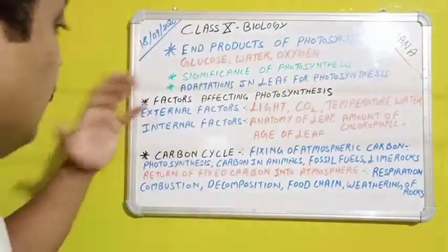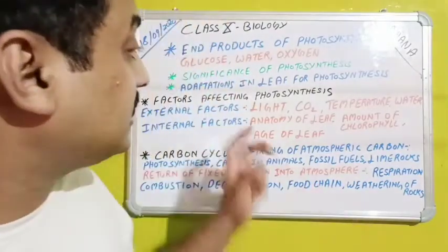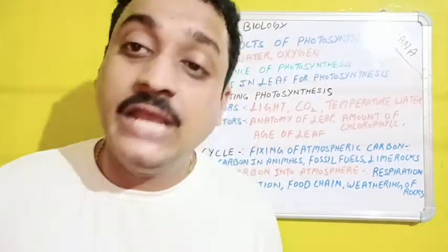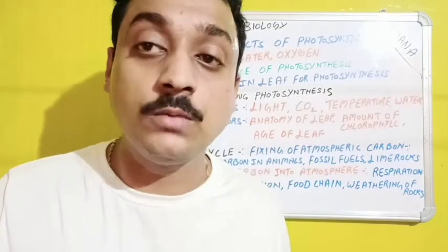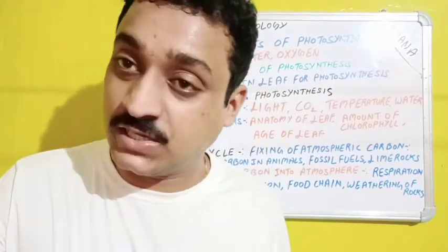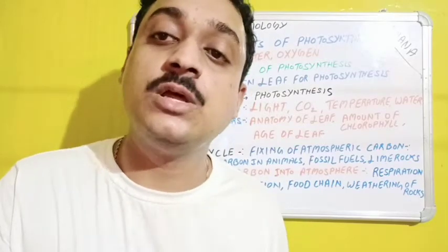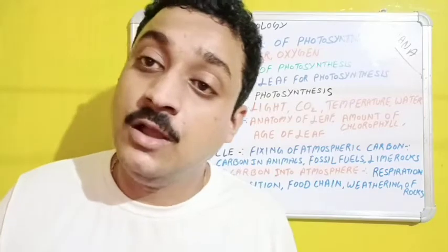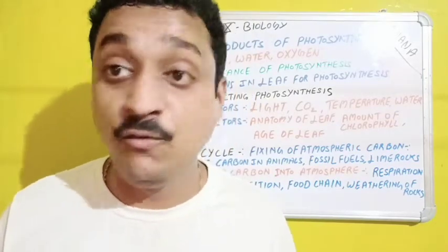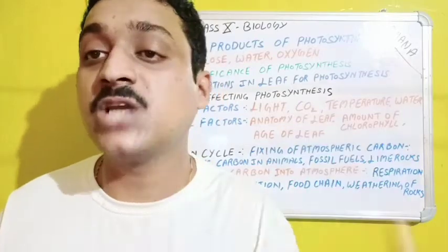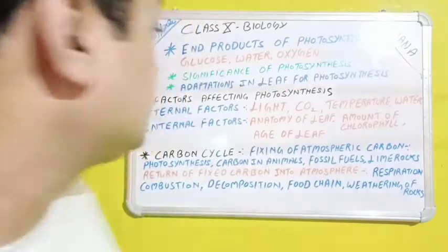Factors affecting photosynthesis include external and internal factors. External factors are light, CO2, temperature, and water. Regarding light: if intensity is less, photosynthesis is less; if intensity is more, photosynthesis is more; but if light exceeds a limit, it damages the chlorophyll and hampers photosynthesis, meaning the plant cannot produce enough food.